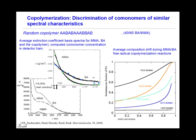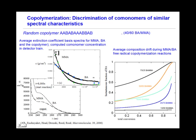An important progress we made a few years ago was in discrimination of comonomers of similar spectral characteristics. Here are results from a random copolymer made by free radical polymerization of butylacrylate and methylmetacrylate. What we show here is the comonomer concentrations from both AECOM and GPC.